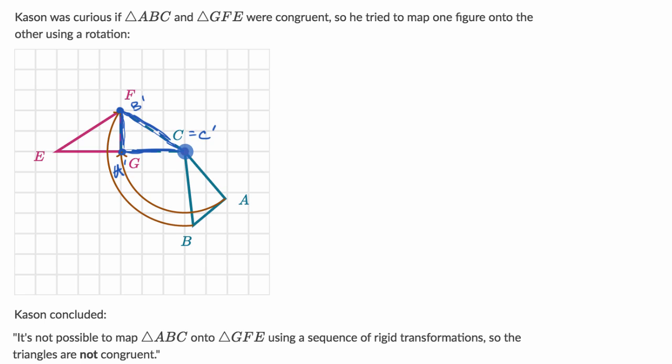So C is equal to C prime, but he's not done. There's another rigid transformation he could do and that would be a reflection about the line FG. So if he reflects about the line FG, then this point is going to be mapped to point E, just like that.